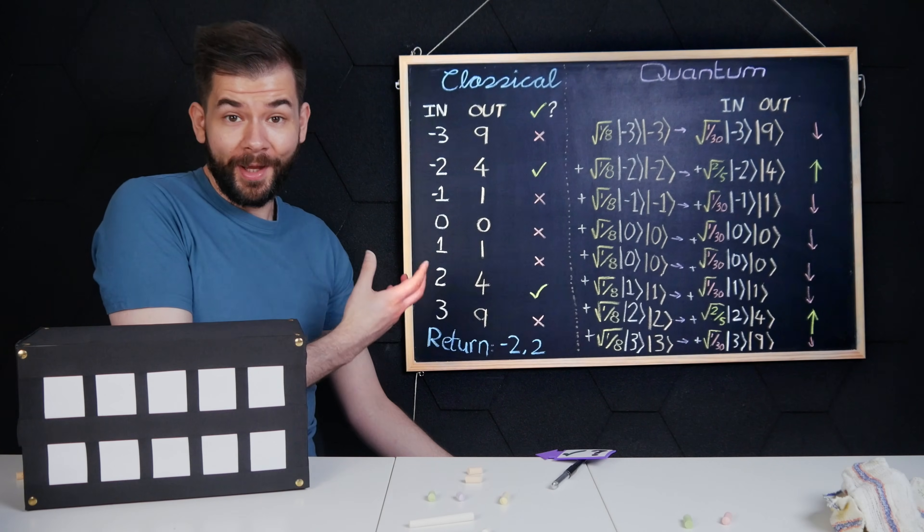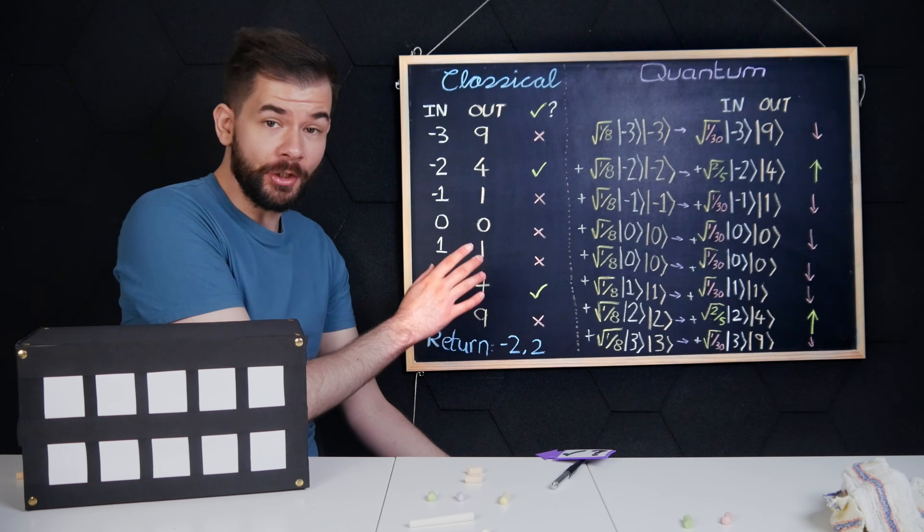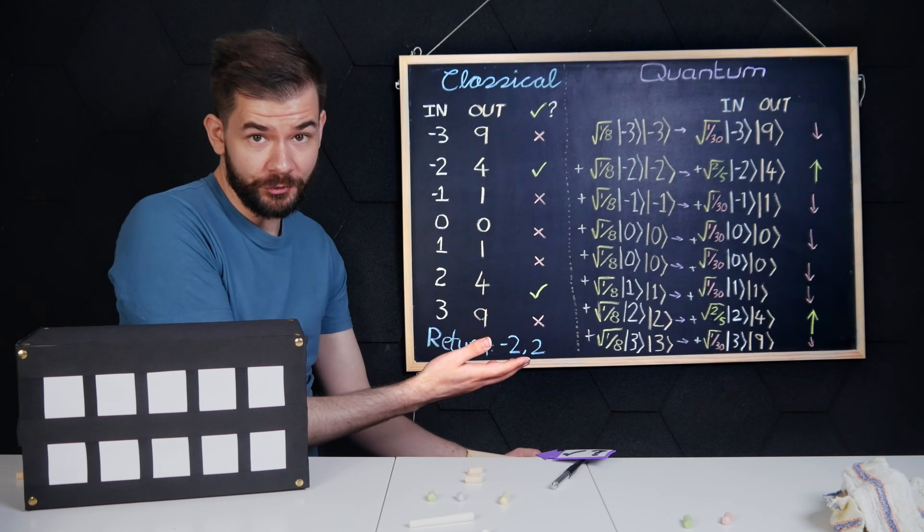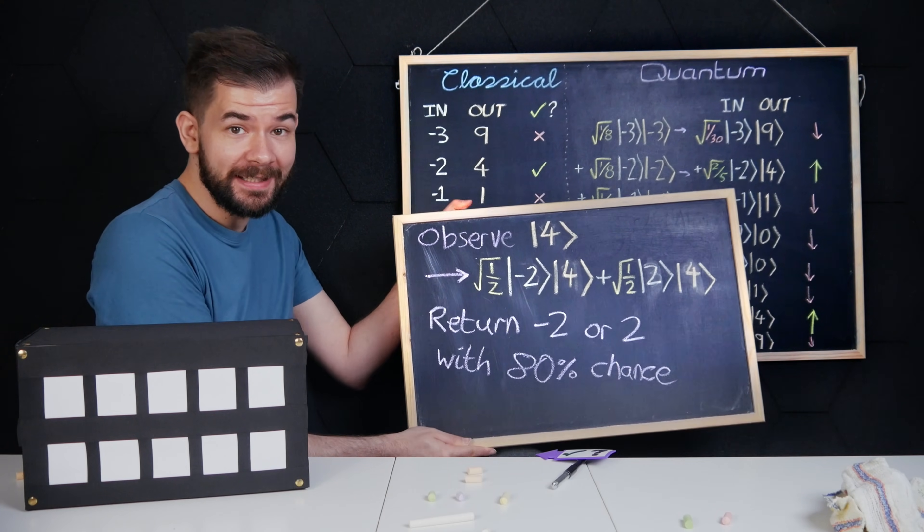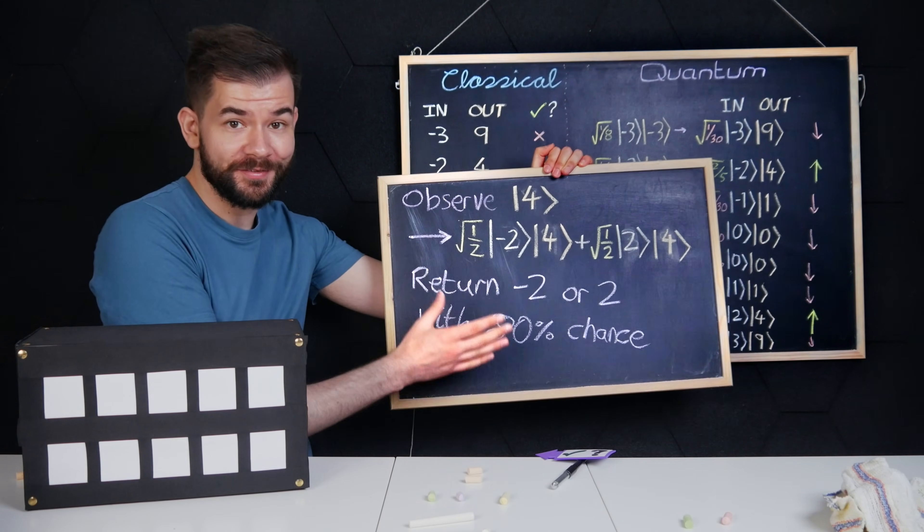So let's say I apply it on my output set and say it inflates the probability of output four to 80%. Now when I measure, I'm most likely going to measure four. And now due to entanglement, I'm guaranteed to measure one of the two correct inputs.